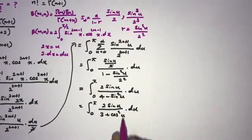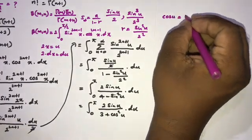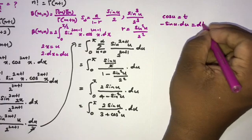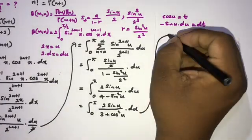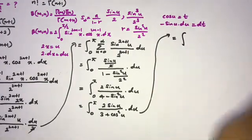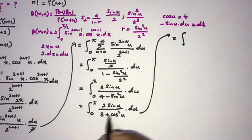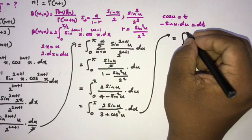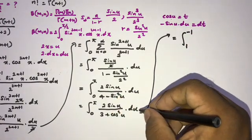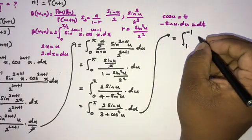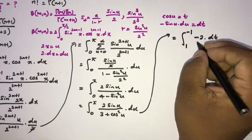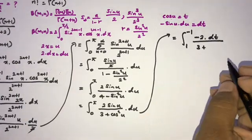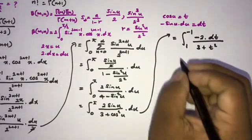To evaluate this integral we use the substitution cosine(u) equals t. Differentiating gives minus sine(u) du equals dt. The limits change: when u approaches 0, t equals 1; when u approaches pi, t equals minus 1. So 2 sine(u) du becomes minus 2 dt, and the denominator becomes 3 plus t squared.